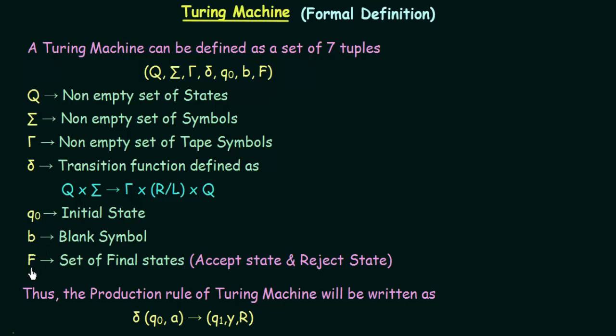Then we have F, which is the set of final states. In Turing machine, there are basically two kinds of final states: the accept state and the reject state. So F represents the set of final states. These are the seven tuples that are used to define a Turing machine.